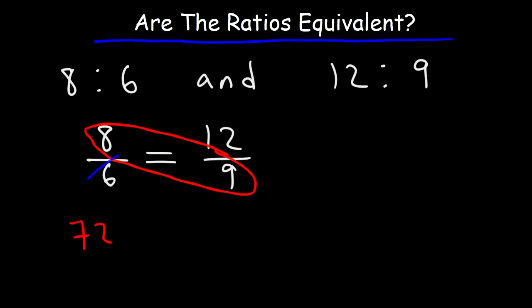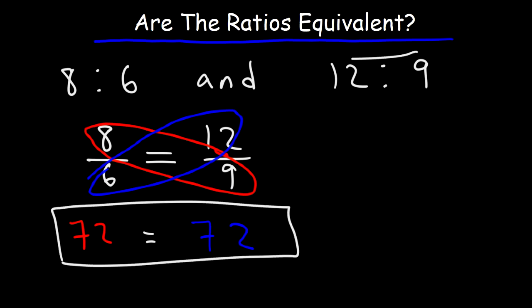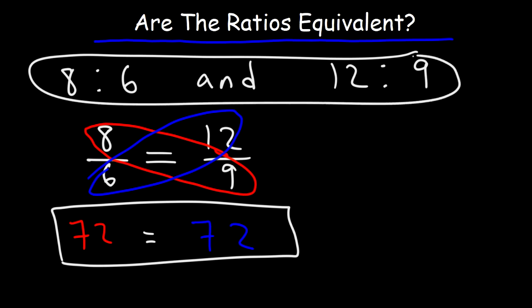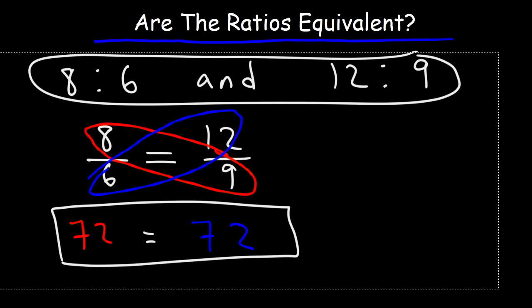Next, we're going to multiply 6 and 12. What is 6 times 12? If you add 12 six times, what would you get? 10 times 6 is 60, 2 times 6 is 12, 60 plus 12 is 72. So notice that these two are the same. Therefore, these two ratios are equivalent to each other. And so that's two ways in which you can tell if two ratios are equivalent.